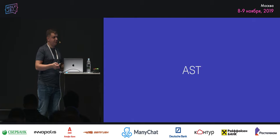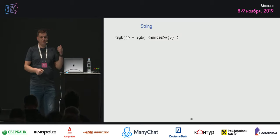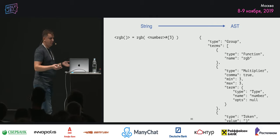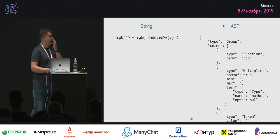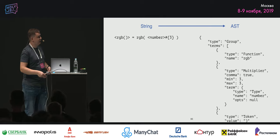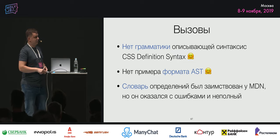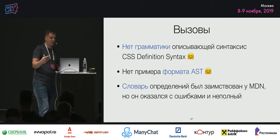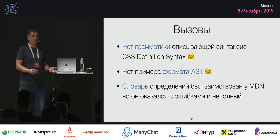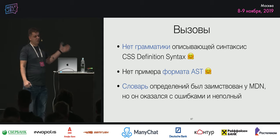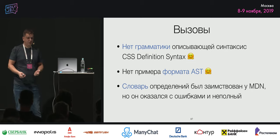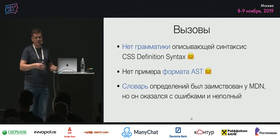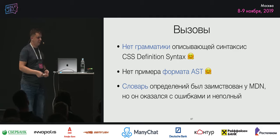Что такое AST? Это Abstract Syntax Tree. Например, у нас есть та же самая функция RGB — это строка. Из неё мы получаем некоторое дерево: это уже объекты, с которыми проще работать. Понятно, что есть функция, мультипликатор, тип number и так далее. Но тут были вызовы, потому что Definition Syntax сам по себе описан, но его грамматики как таковой нет. Нужно было догадываться, в каких случаях что делать. Не было примера AST, потому что никто это раньше не делал, и спецификация об этом ни слова. Нужно было откуда-то взять все определения всех свойств. Для этого нашёлся словарь у MDN, но он оказался с большим количеством ошибок и достаточно неполным.